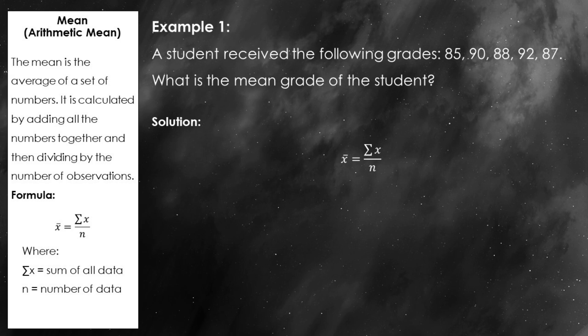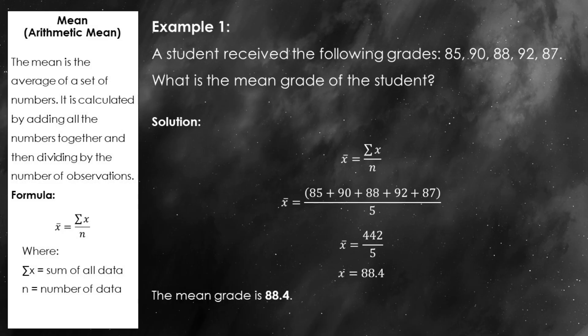For example, if a student received grades of 85, 90, 88, 92, and 87, we can calculate the mean by adding those numbers together, which gives us 442, and then dividing by 5. So the mean grade is 88.4. Pretty straightforward!